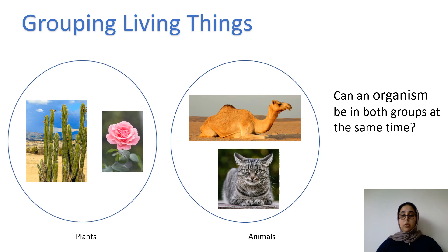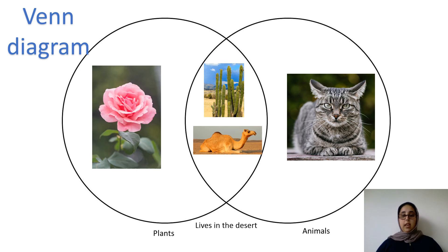Now I have a question for you. Can an organism be in both groups at the same time? Pause the video and tell your adult what you think. Here I have a Venn diagram with my categories of plants and animals showing their differences, but in the middle I have the camel and the cactus, which shows their similarity — they both live in the desert. So they are both living things and they live in the desert; that is the similarity they share.